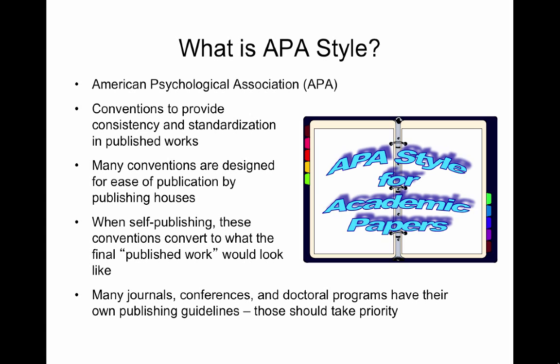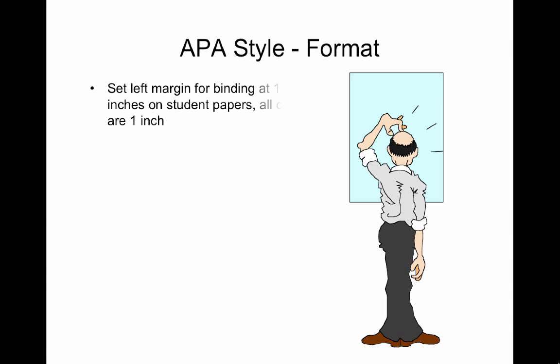APA Style Formatting follows some rules. Set the left margin for binding at 1.5 inches on student papers. All others are 1 inch. Use 12-point serif font, like Times Roman, with no hyphenation and an uneven right margin.